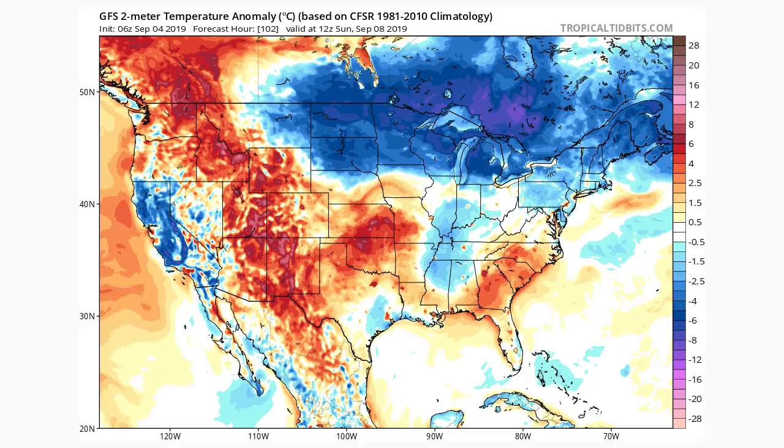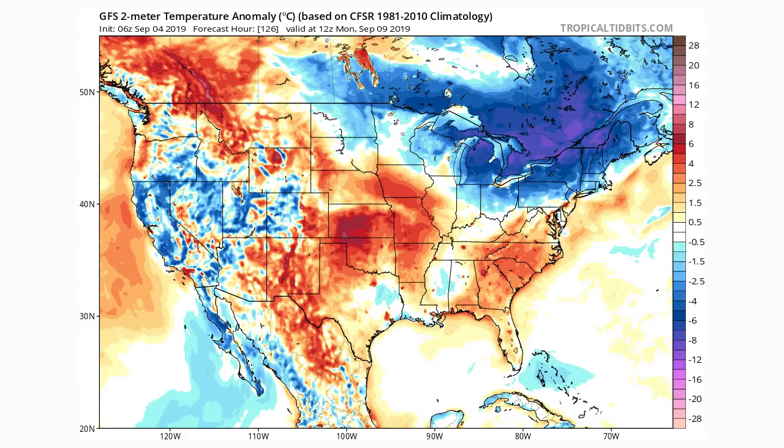A lot of people ask why I use Celsius — this is a model run and I don't have control over whether it displays in Fahrenheit or Celsius. It's not a map I'm creating. If you want to know how far below average it is in Fahrenheit, you can search up a converter for your area depending on what color shade applies to your region. It would be too difficult for me to do that conversion for every location.